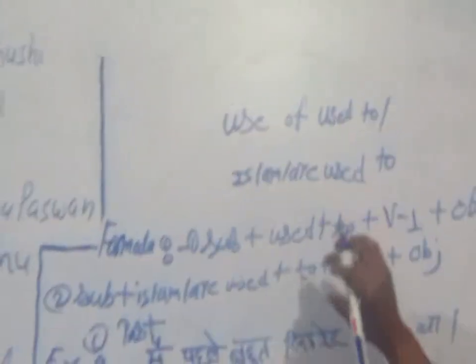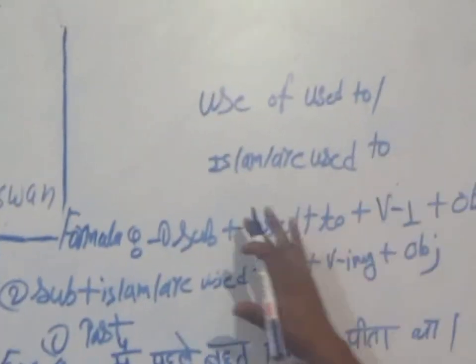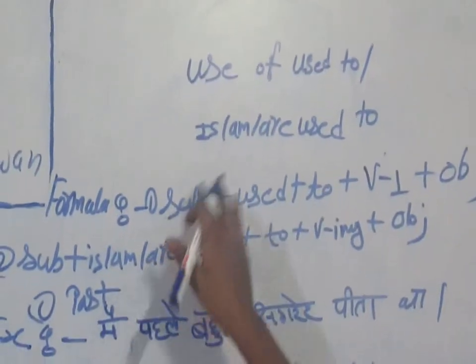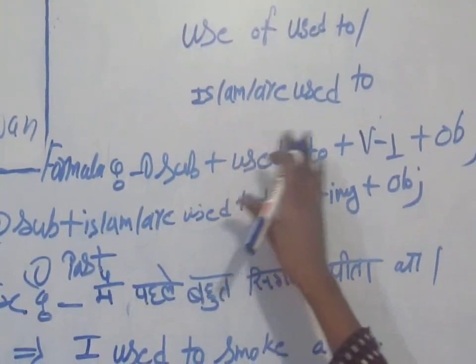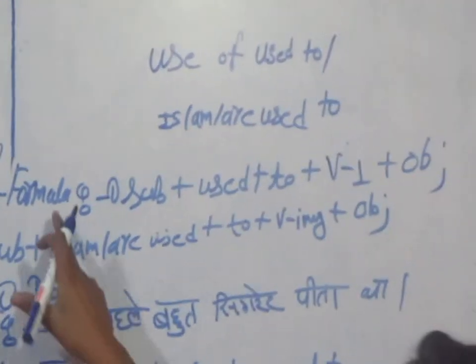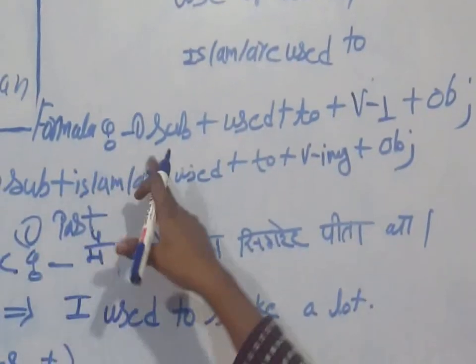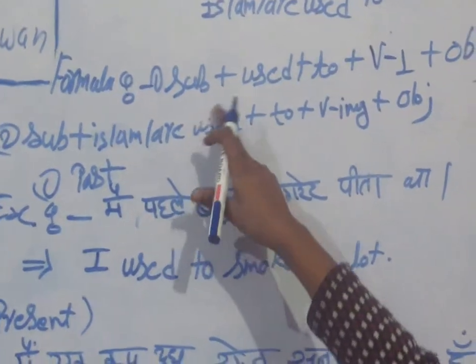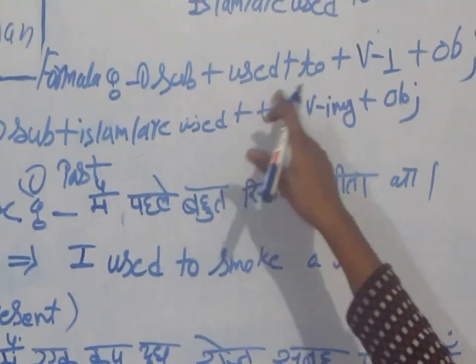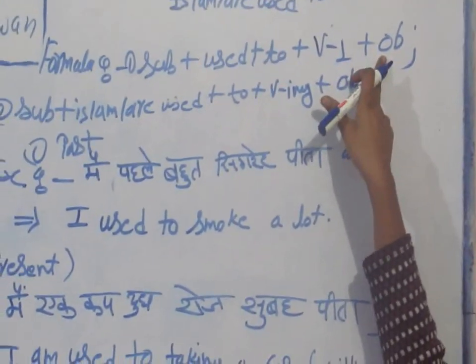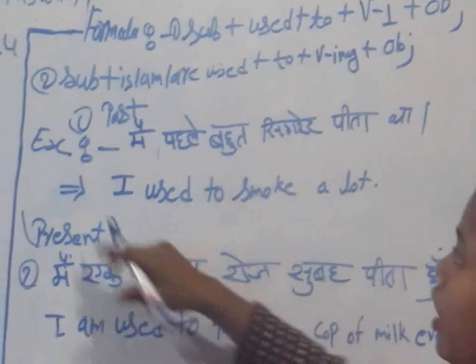Use of 'used to' and present. Formula: in the past, subject plus 'used to' plus verb first form plus object.